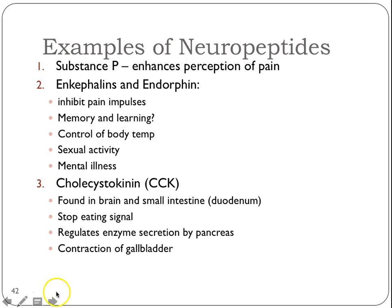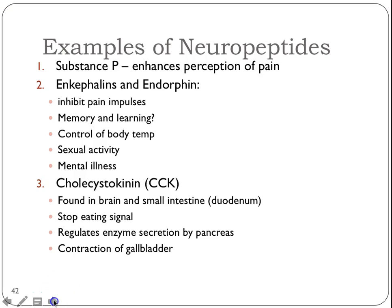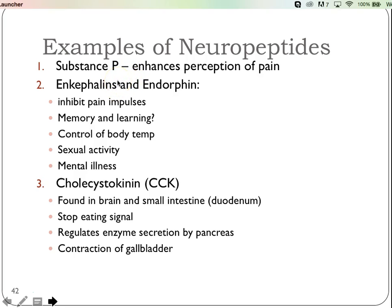We're going to talk about just a couple of neuropeptides. First is substance P. Basically, one of its jobs is to enhance the perception of pain. If you block substance P, people report things not hurting as much or at all.